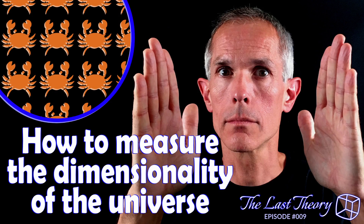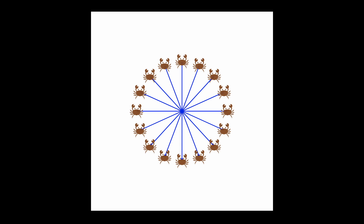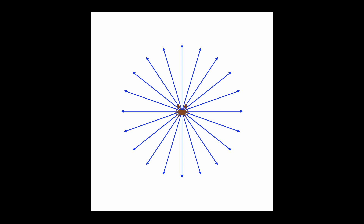I've already talked about how to tell whether your universe is two-dimensional or three-dimensional, or has some other number of dimensions. Remember I asked you to imagine a two-dimensional crab in a two-dimensional universe? By moving an equal distance in every possible direction and measuring how much space it covers, the crab can calculate the dimensionality of the universe from inside that universe.